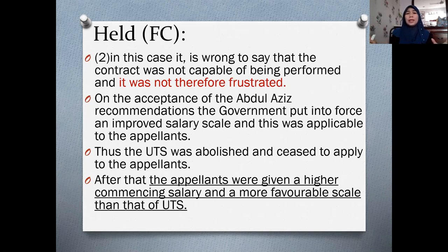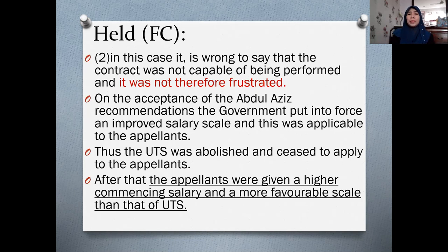The new scheme was an improved salary scale applicable to all teachers and government servants being paid under the salary scheme. The UTS scheme was abolished and ceased to apply to the appellants. The court found that the appellants were actually given a higher commencing salary and a more favourable scale than that of the UTS. The contract remained valid and judgment was again given to the Government of Malaysia; the appellants could not succeed in their claim.